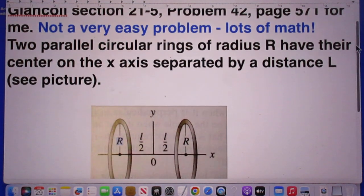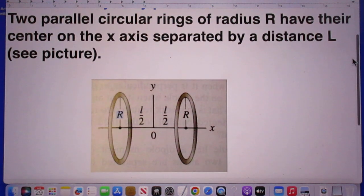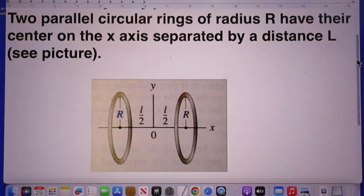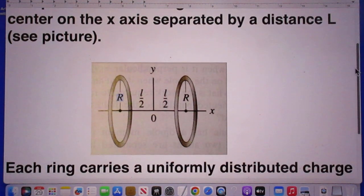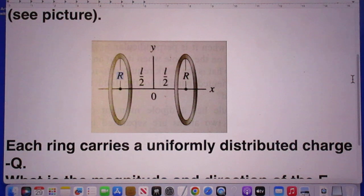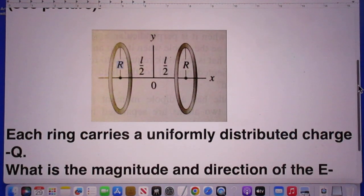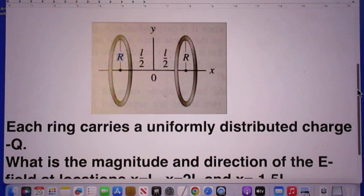Two parallel circular rings of radius R have their center on the X axis separated by a distance L. So look at this picture. Each ring carries a uniformly distributed charge minus Q.